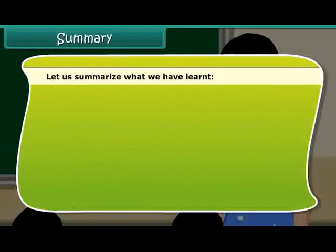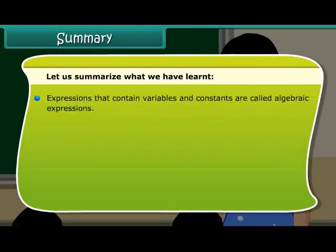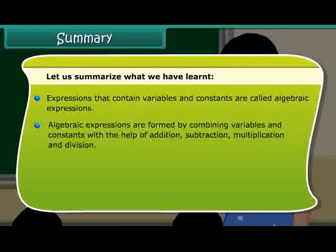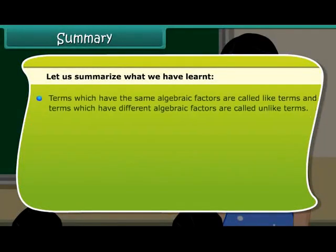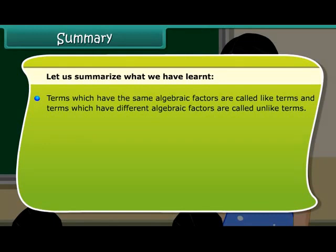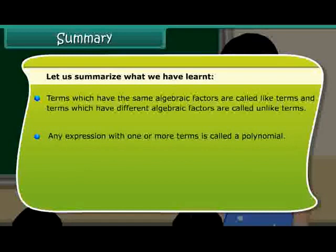Let us summarize what we have learned. Expressions that contain variables and constants are called algebraic expressions. Algebraic expressions are formed by combining variables and constants with the help of addition, subtraction, multiplication, and division. Expressions are made up of terms, and a term is a product of factors. Terms which have the same algebraic factors are called like terms, and terms which have different algebraic factors are called unlike terms. Any expression with one or more terms is called a polynomial.